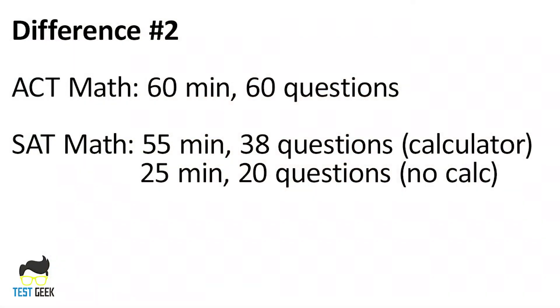The next difference between these two sections is timing. On the ACT math, you have 60 minutes to answer 60 questions, which is one minute per question. While on the SAT, you have a 55-minute calculator-optional section, meaning you can use a calculator if you'd like, and this section has 38 questions, giving you almost 90 seconds per question. On the second math section, the one that is no calculator, you have 25 minutes to answer 20 questions, which is 75 seconds per question.